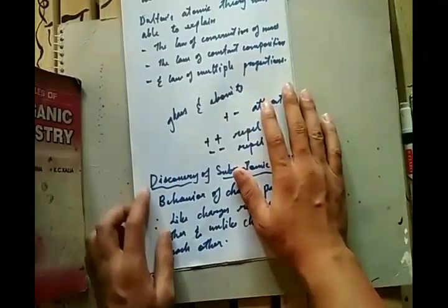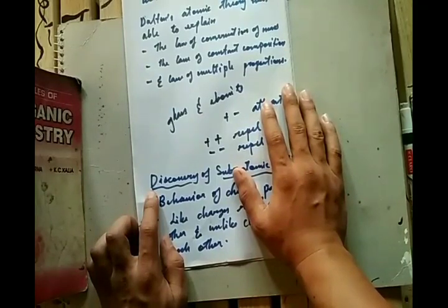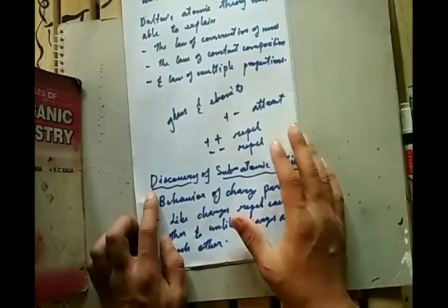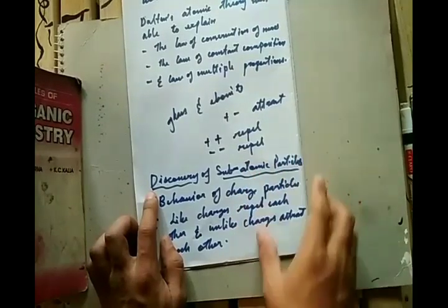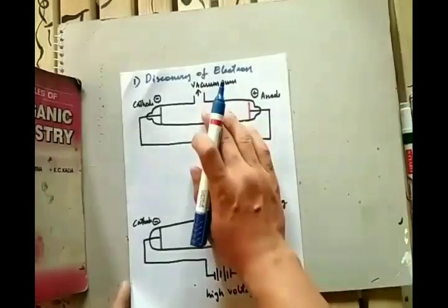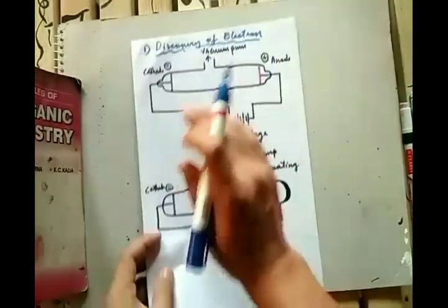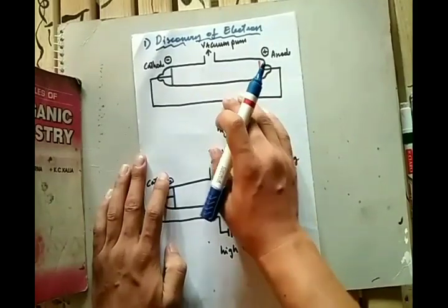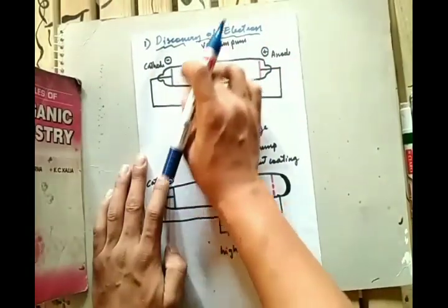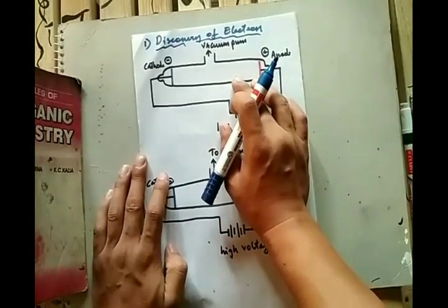Experiments on electrical discharge give an insight into the structure of atoms. Experiments done on electrical discharge through gases gave an insight into the structure of atoms. Now we will discuss those experiments done by scientists, especially Faraday. This leads us to the discovery of electrons. The experiment was carried out using a glass tube called the cathode ray discharge tube.